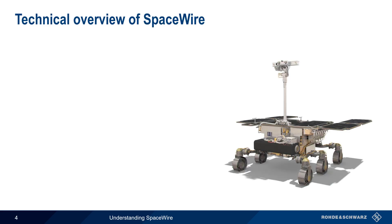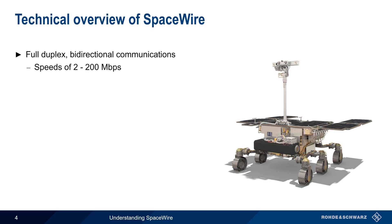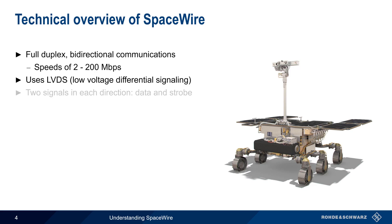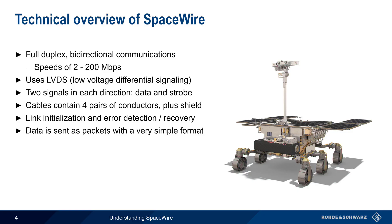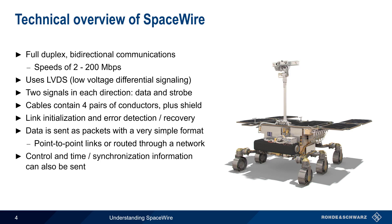Before we get into details, let's first provide a general technical overview of SpaceWire. SpaceWire provides full-duplex, bi-directional communications at speeds of approximately 2 to 200 megabits per second. Bits are encoded using LVDS, or Low Voltage Differential Signaling, and there are two signals in each direction: data and strobe. These signals are carried over cables containing four pairs of conductors plus a shield. Special link initialization and error detection/recovery procedures help to enhance resiliency. User data is sent in the form of characters and packets with a very simple format, and nodes can be connected either via point-to-point links or via routers. In addition to user data, control and time or synchronization data can also be transferred.